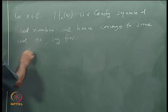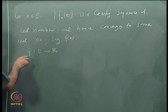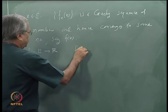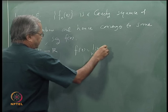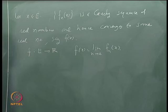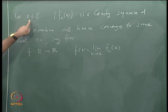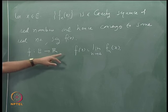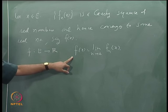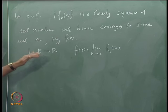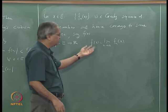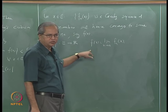At this point we have only shown pointwise convergence. How we constructed f was by taking, for each x, the limit of f_n(x), which gives pointwise convergence. But what we want is uniform convergence. If a uniform limit exists it must coincide with the pointwise limit, so we must show this is actually a uniform limit.